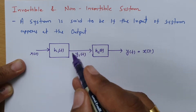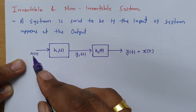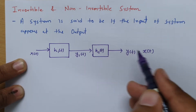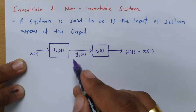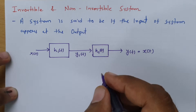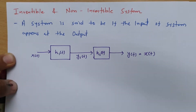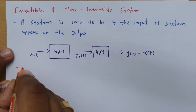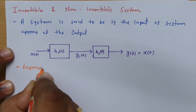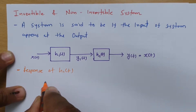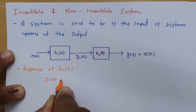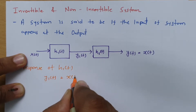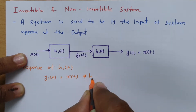If output y1(t) does not have the input component x(t), then you cannot have any other system that results in the input, because you don't have the component of input. To understand this better, if I explain it with the response it will be easier. The response of h1(t) is y1(t), and we can obtain this response based on convolution — the convolution of x(t) with h1(t).